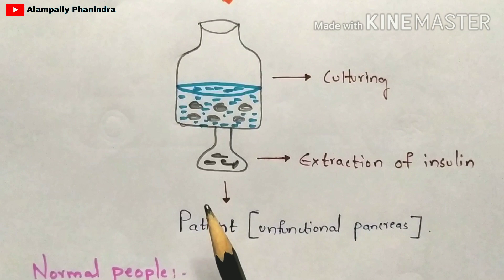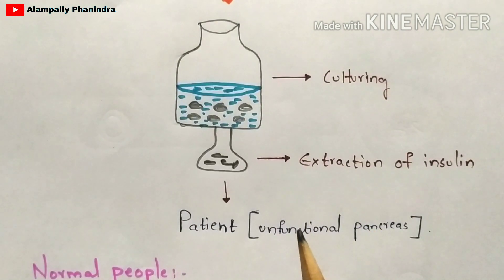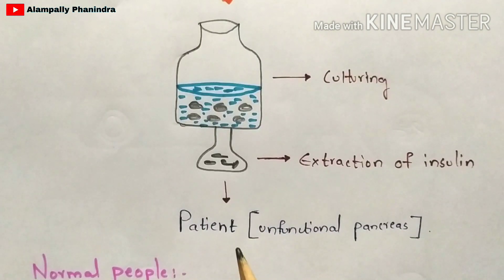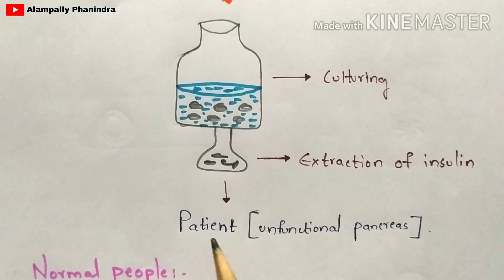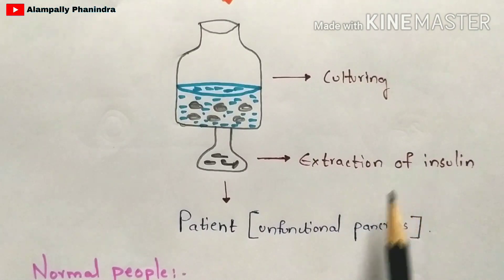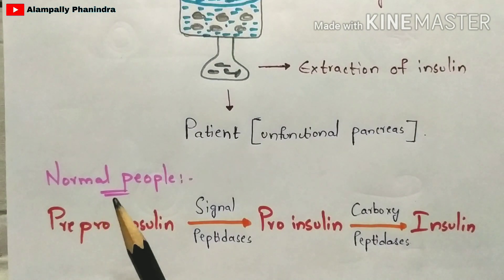The patients this insulin is used for are those whose pancreas is non-functional. The main function of the pancreas is to produce insulin, which maintains blood glucose levels. If the patient's pancreas is non-functional, it will not secrete insulin, and without insulin the blood glucose levels cannot be maintained — the patient may develop hyperglycemia or hypoglycemia and may be at risk of death. This rDNA-produced insulin is injected into such patients.